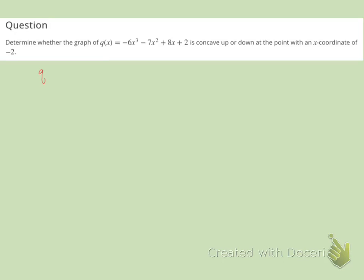We have to start with the first derivative. So q prime of x is going to be negative 18x squared minus 14x plus 8.